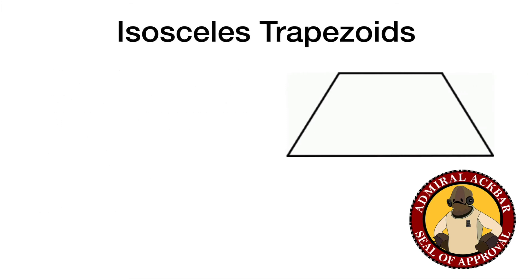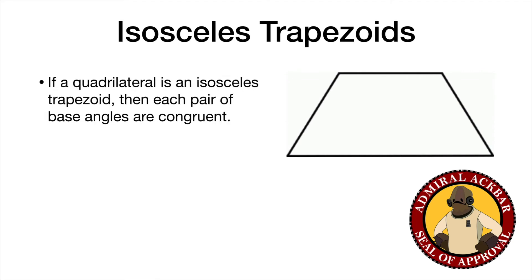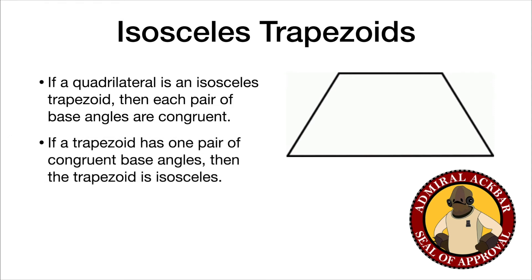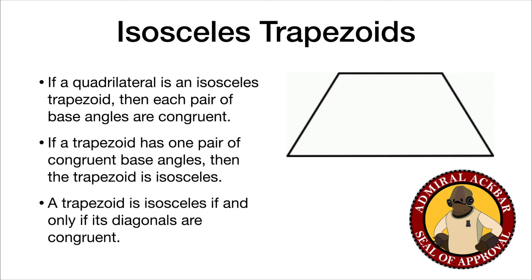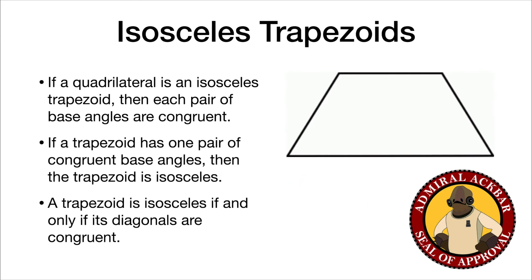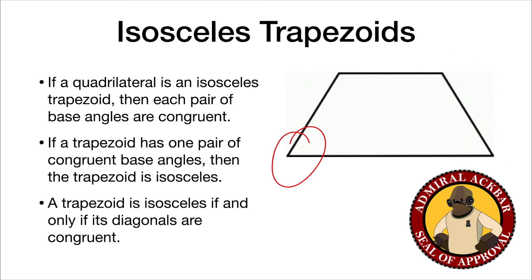Let's talk about isosceles trapezoids because they have more rules. If a quadrilateral is an isosceles trapezoid, then each pair of base angles are congruent. If the trapezoid has one pair of congruent base angles, then the trapezoid is isosceles. A trapezoid is isosceles if and only if the diagonals are congruent. The co-interior angles on each side have to add up to 180 degrees, so if one pair is congruent, the other must also be congruent to be supplementary.